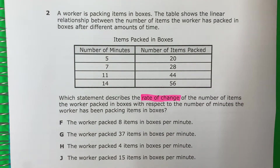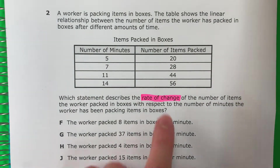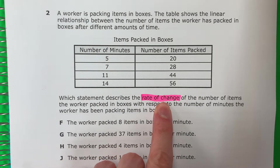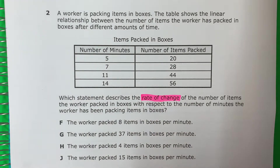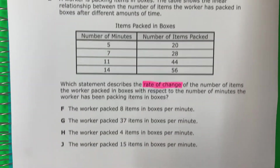Actually that's three words. Actualmente es tres palabras. But it's one thing. Pero es una cosa. So all you need to do is remember rate of change. Solo deben recordar rate of change.